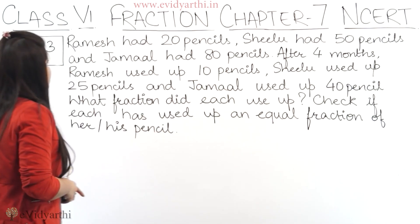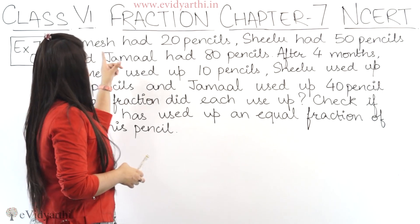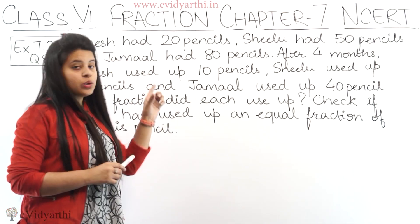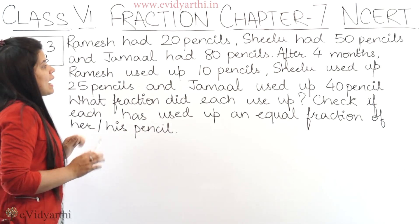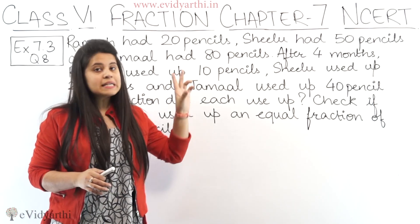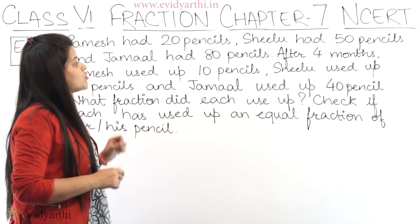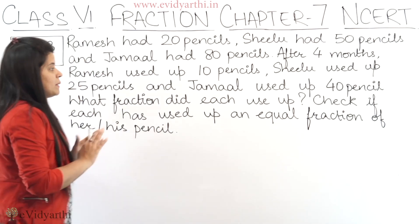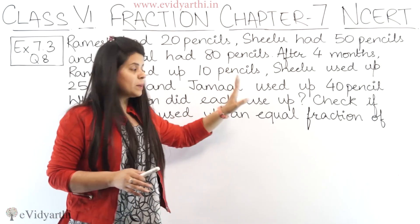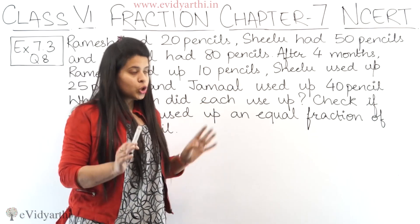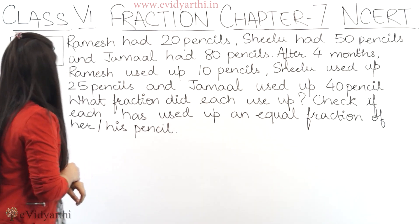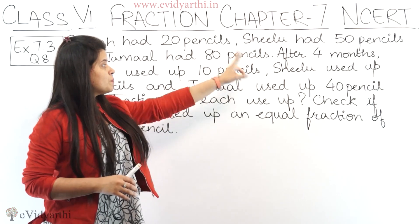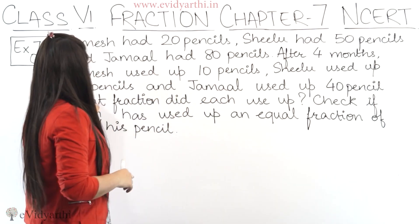In this question we have: Ramesh has 20 pencils, Shilu has 50 pencils, and Jamal has 80 pencils. After 4 months, Ramesh used 10 pencils. Shilu used 25 pencils. So Shilu has 25 pencils remaining.